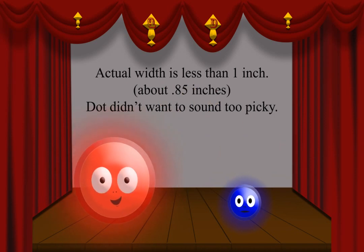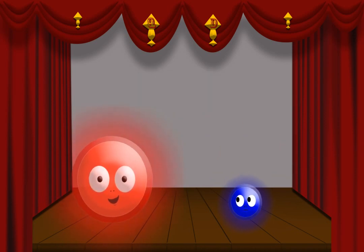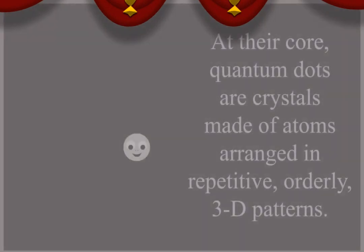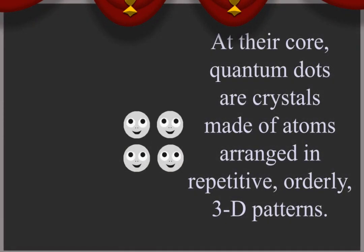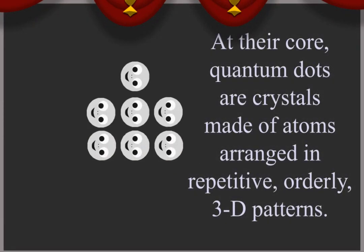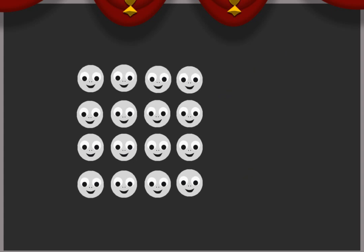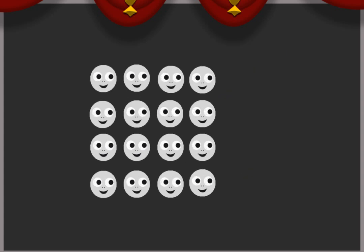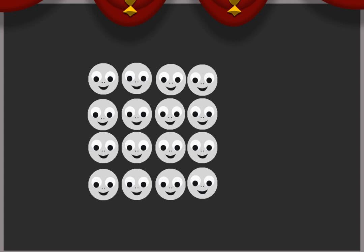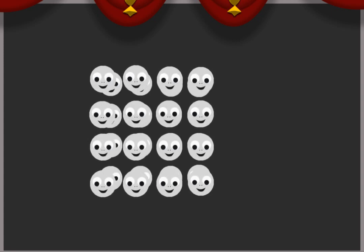Wow, that's really tiny. What are we made of? Quantum dots can be made of various elements, but our tiniest building blocks, our atoms, are arranged in crystal formation. That means they're put together in organized, repeating, geometric, three-dimensional patterns.